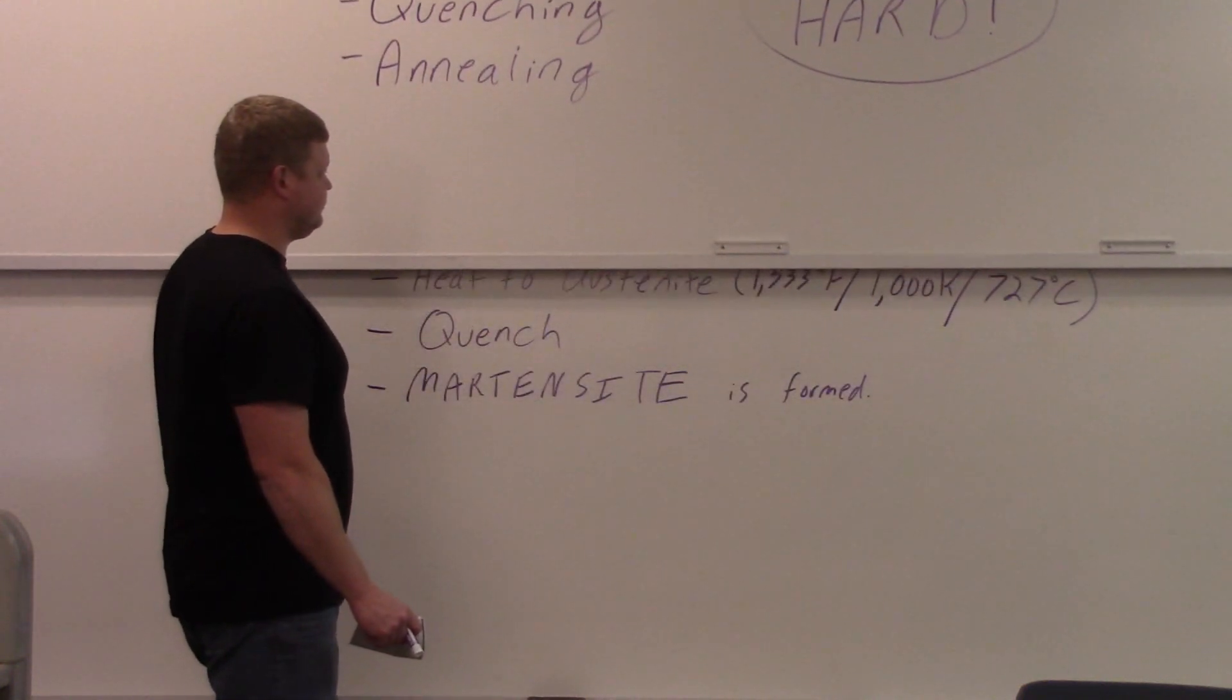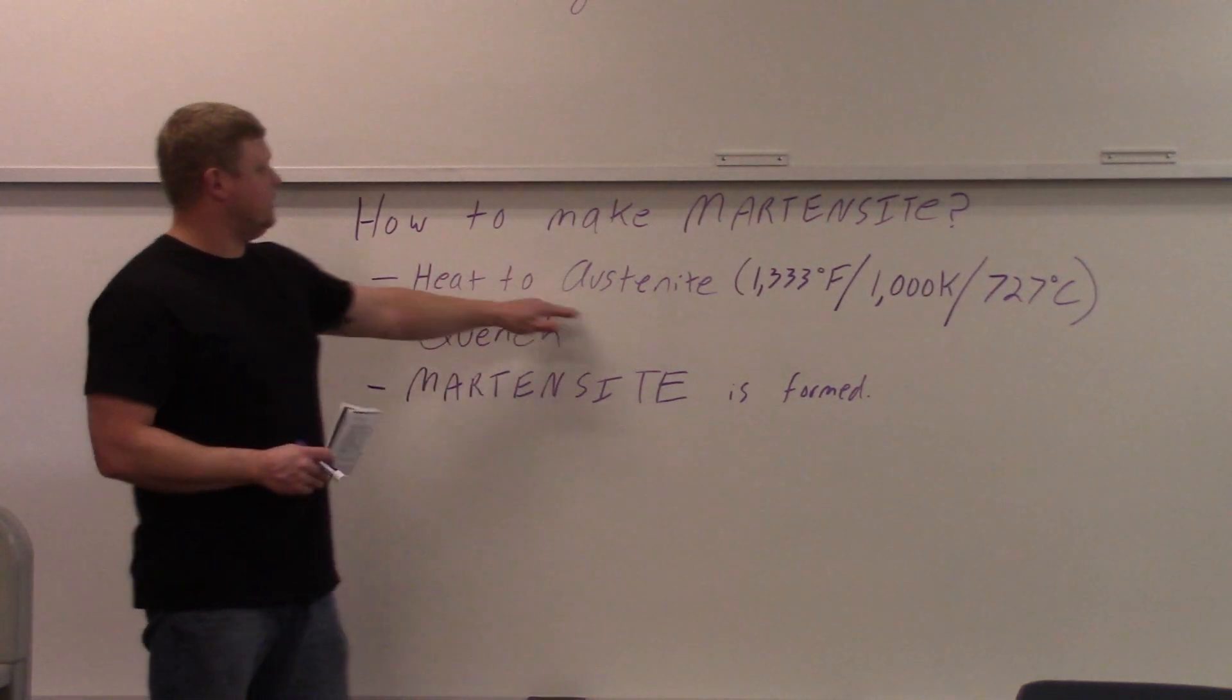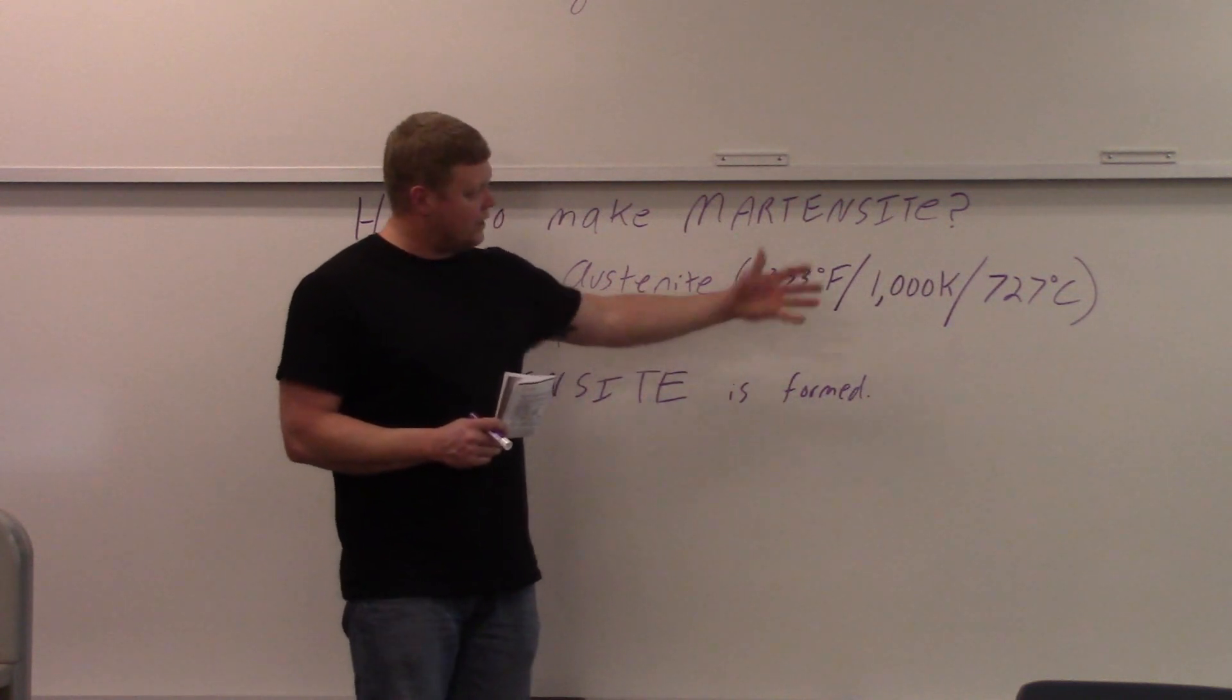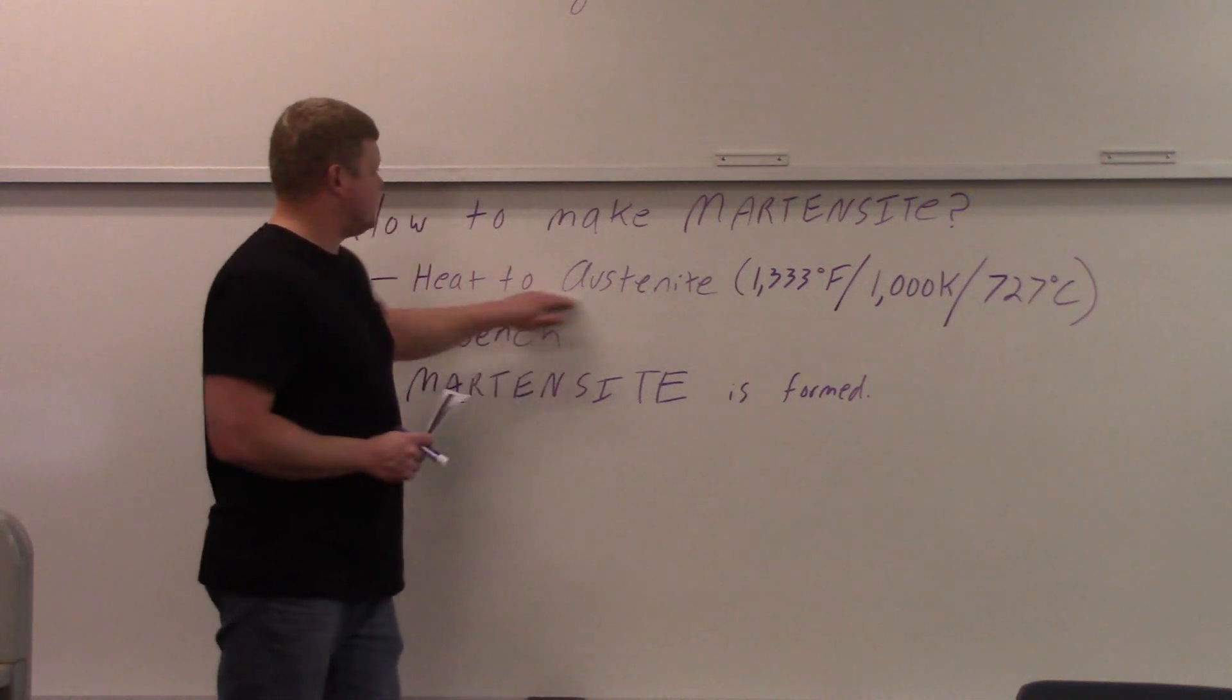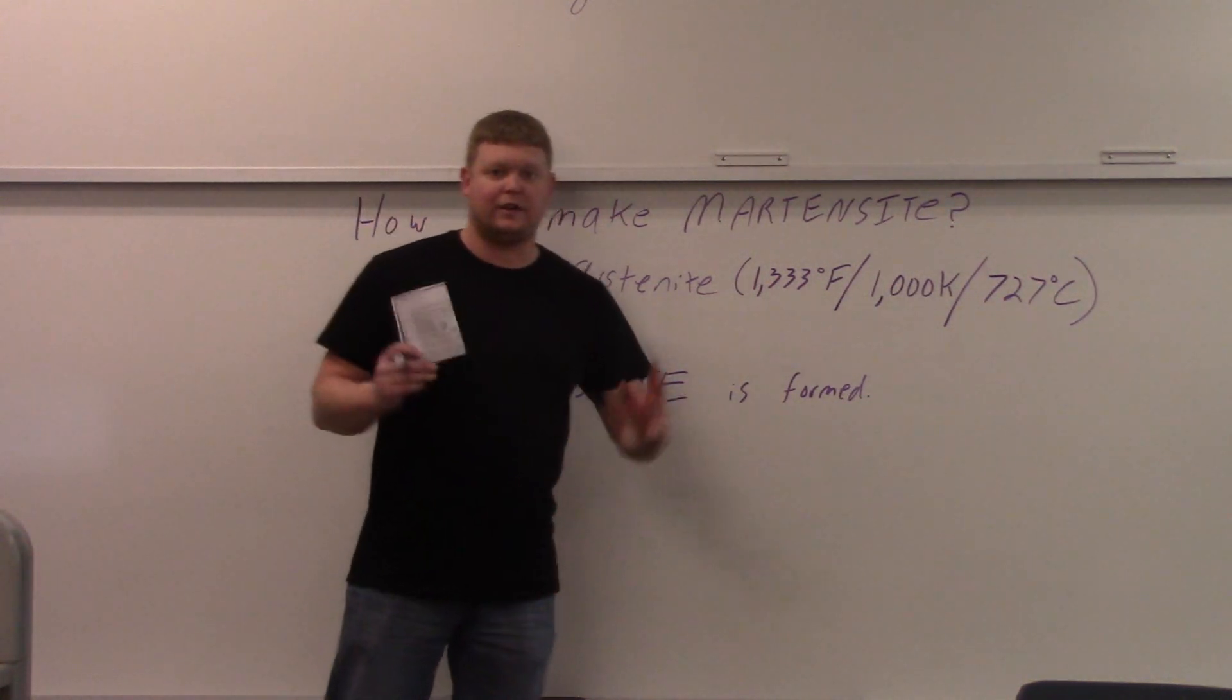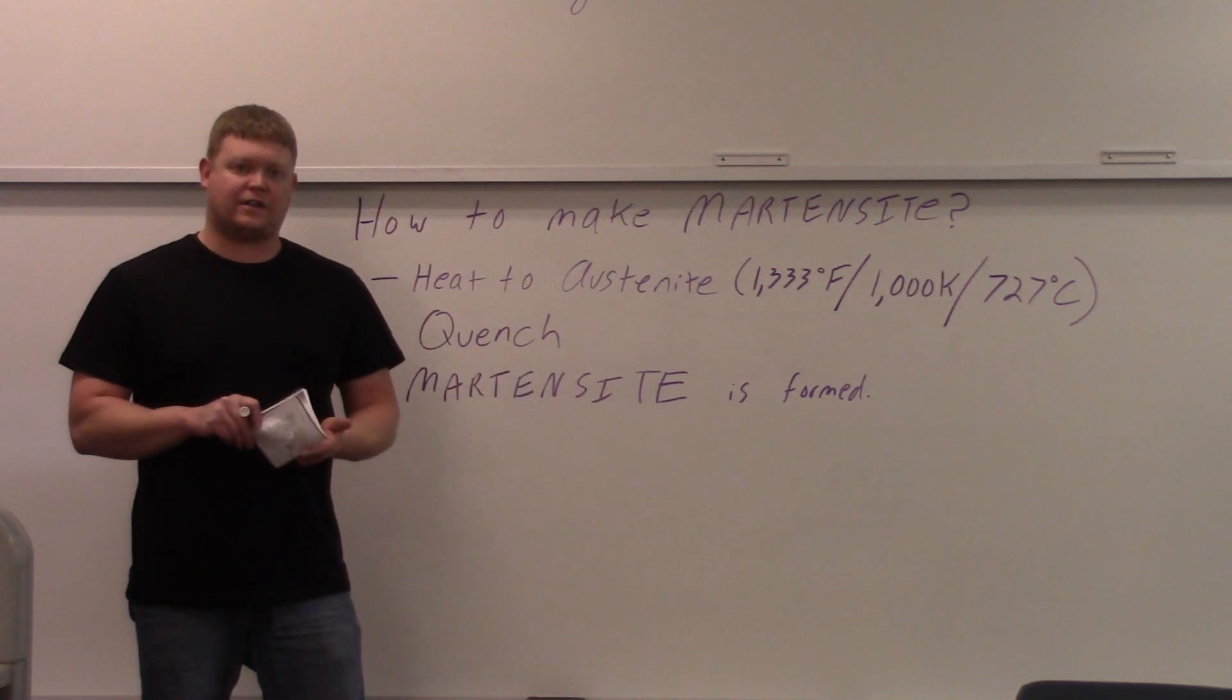It's pretty difficult. How to make Martensite. We're making up a batch of Martensite here, I guess. Heat to austenite. That's another microstructure. The austenite temperature is 1,333 degrees Fahrenheit, 1,000 degrees Kelvin, and 727 degrees Celsius. So you have to heat it up to austenite, then you're going to do your quenching procedure we just talked about, and then your Martensite is formed. That's it. It's done. You have Martensite. But the big thing is you've got to have enough carbon in order to produce that Martensite. You've got to cool it fast enough.